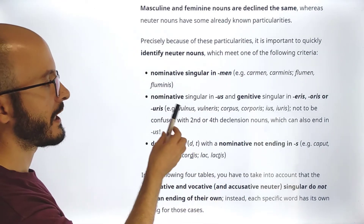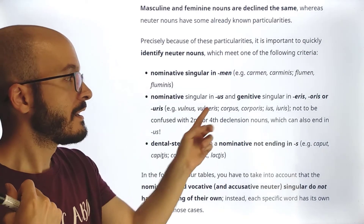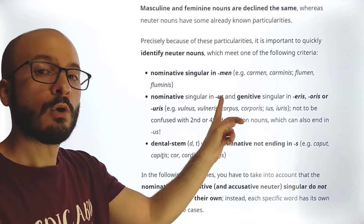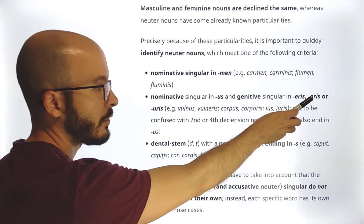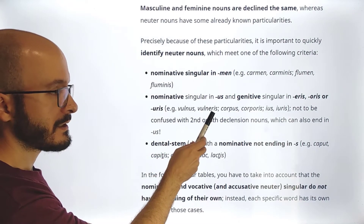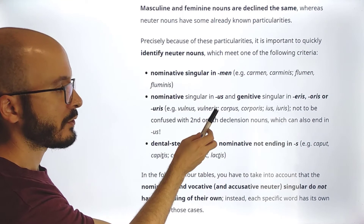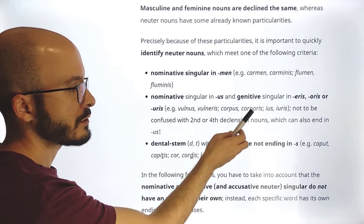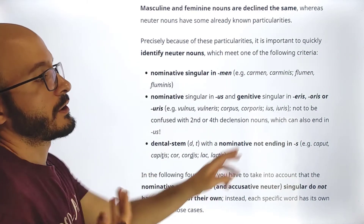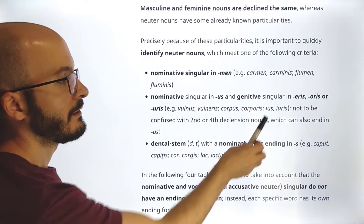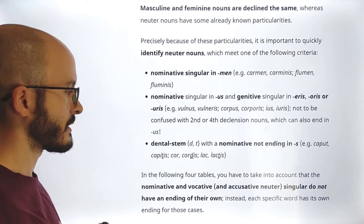Another way to identify neuter nouns: nominative singular ending in '-us,' with a genitive singular in '-eris,' '-oris,' or '-uris.' Note that the nominative in '-us' is not only for the second declension — it also appears in the third and fourth declensions. For example, 'vulnus, vulneris' — us/eris, so this is neuter, meaning 'wound.' Then 'corpus, corporis' — us/oris, meaning 'body.' And 'ius, iuris' — us/uris, meaning 'law' (from which we get 'jurisdiction,' etc.). Be careful not to confuse these with second declension nouns, which can also end in '-us.'